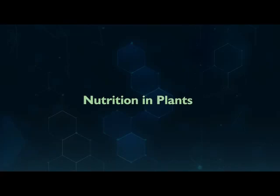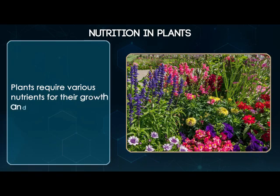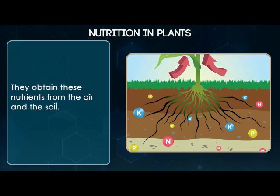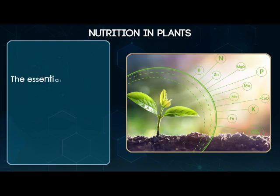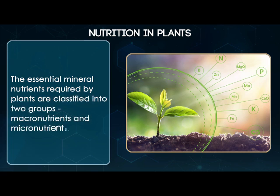Nutrition in plants. Plants require various nutrients for their growth and development. They obtain these nutrients from the air and the soil. The essential mineral nutrients required by plants are classified into two groups: macronutrients and micronutrients.